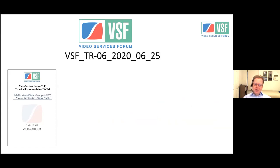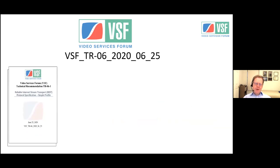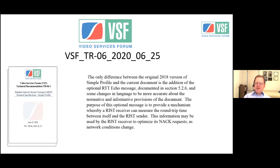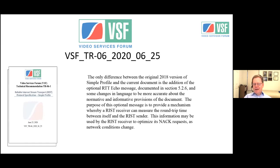The original TR-06-1 came out October 17, 2018. On June 25th, 2020 we issued an update. The only difference is the addition of an optional round trip time echo message in section 5.2.6, plus some language changes to clarify normative and informative provisions. This optional message provides a mechanism whereby RIST receivers can measure the round trip time between itself and the RIST sender, helping to optimize NAK requests as network conditions change. We ensured backwards compatibility — it is a relatively minor, dot-update level change.